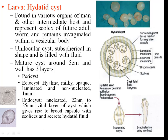Following the pericyst, there is an ectocyst, which is hyaline, milky, opaque, and lamellated. This is a non-nucleated layer measuring around 1 mm in thickness and is parasite-derived. This is followed by the endocyst, a nucleated layer derived from the parasite, varying from 22 to 25 nanometres in size. The endocyst is the vital or germinal layer from which the protoscolices will develop.